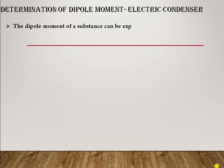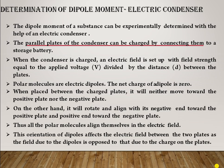The determination of dipole moment can be done using an electric condenser. The dipole moment of substances can be experimentally determined with the help of an electric condenser. The parallel plates of the condenser are charged by connecting them to a strong battery. When the condenser is charged, an electric field is set up with field strength equal to the applied voltage divided by the distance between the plates.